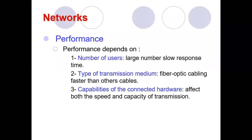The capabilities of connected hardware also affect both speed and capacity of transmission. Even if network capacity is good, using a low-configuration machine — say with only 2 GB RAM and slow processing speed — can affect performance. The capabilities of routers and switches also matter when assessing performance.